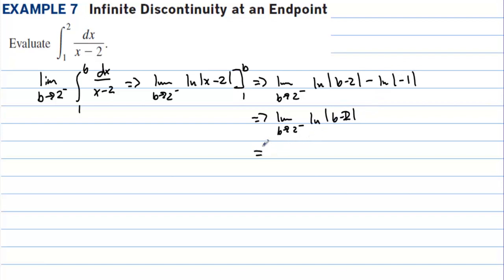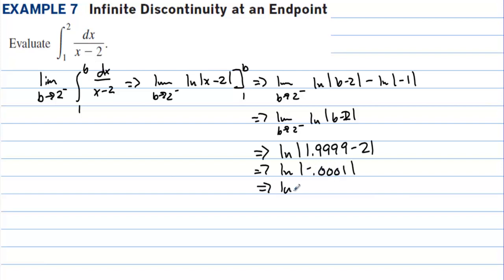Now imagine approaching 2 from the left — getting very close, like 1.9999 minus 2, which is very close to 0. That goes to the natural log of the absolute value of negative 0.0001, and taking the absolute value gives natural log of 0.0001, which is a very small number.